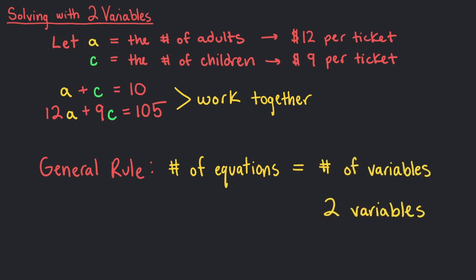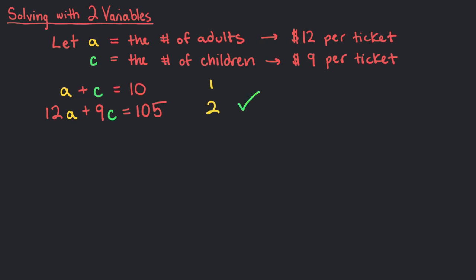So for two unknowns, you will need two equations, which we have. There are three well-known ways to solve for a and c: graphing, substitution, and elimination.